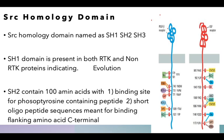We came to know this with the fact that tyrosine kinase receptors contain inside them Src homology domains. Src, which was discussed in earlier lectures, was a transforming growth factor. Similar sequences were identified in other proteins and they were called Src homology domains.